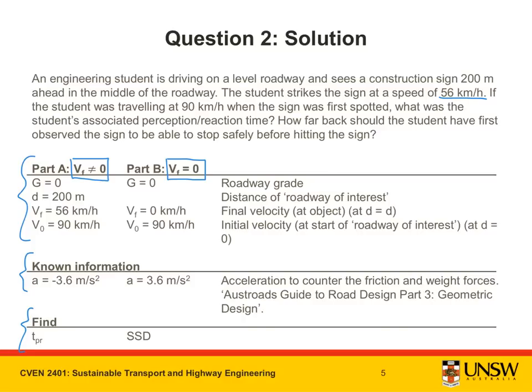In both cases, the roadway grade is zero because the roadway is flat or level. Therefore G is zero. D is the distance of the roadway of interest. In part A, we are told that this distance — over which the student first sees the construction sign and then hits it — is 200 meters. In part B, we don't know what D is because it is actually the SSD, which is something we are asked to find.